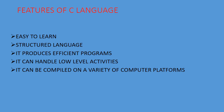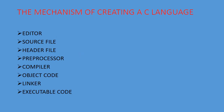The mechanism of creating a C program: first, we write the C program in an editor. After writing, we save the program — that file is called the source file. Each C program is saved with the extension dot C. Next is the header file, which contains the library functions or references needed in the program.